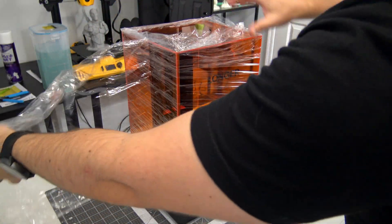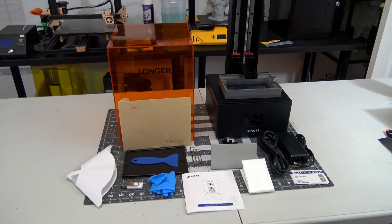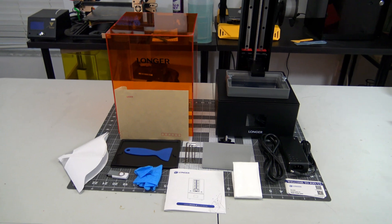The printer has a removable orange acrylic cover, which filters out unwanted UV lights. The initial setup was a breeze. No assembly required. Just unpack, level the bed, and print.